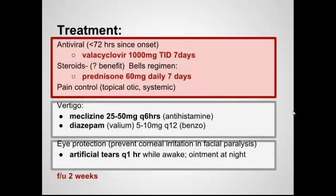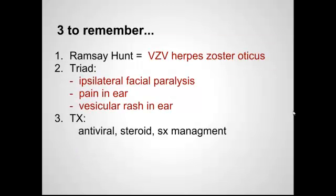Some patients can have pretty significant vertigo. Meclizine or Valium — you can send them home with either if they seem to help when they're in the ER. Lastly, eye protection in patients with significant facial droop such that they can't close their eye all the way, especially at nighttime, to prevent corneal irritation or drying out. Usually recommend artificial tears every hour while awake and some ointment at night. Have these patients follow up within about a week or two.